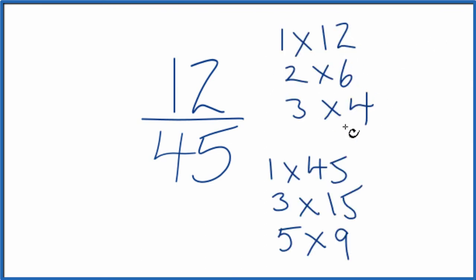When I look at the factors for 12 and 45, I want to find one that's in common, find the greatest factor in common between the two. And it seems like three is the biggest number that is in common between 12 and 45.